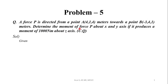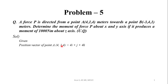First of all, since point A and point B are position vectors, they will be transferred to the origin. The origin is at coordinates (0, 0, 0). The position vector of point A (4, 1, 4) is given by (4-0)i + (1-0)j + (4-0)k, which gives us 4i + j + 4k.